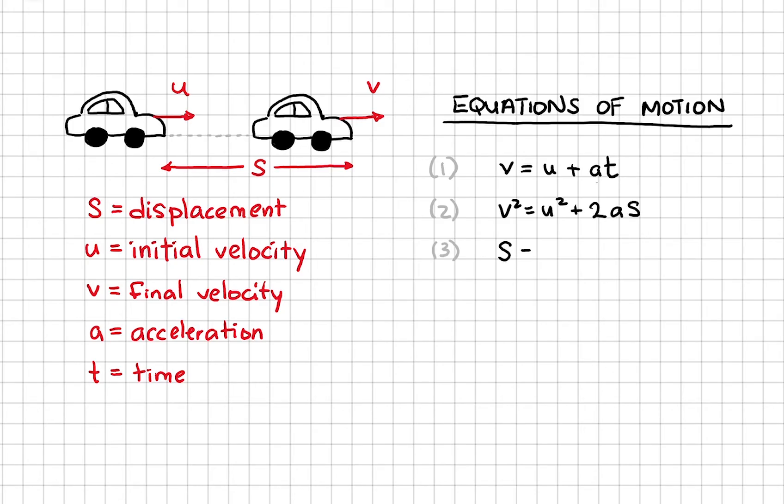Third equation: s is ut plus half at squared. And lastly, s is u plus v divided by 2 times time. We can also easily explain this equation because this chunk here, u plus v divided by 2, is the average velocity.